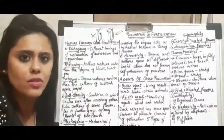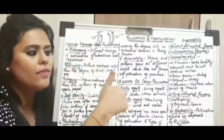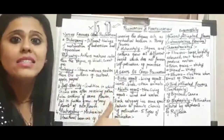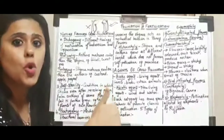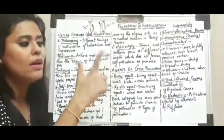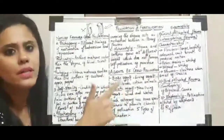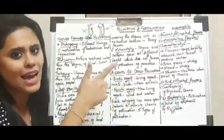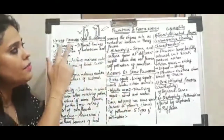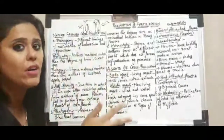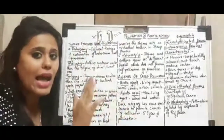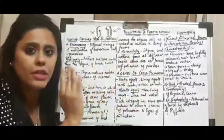Till now we are through with three parts of the chapter. The first part covers the introduction and the fact that nature favors pollination only between the same species. The second part talks about the two different types of pollination — self-pollination and cross-pollination. The third part talks about the different contrivances which favor only cross-pollination.